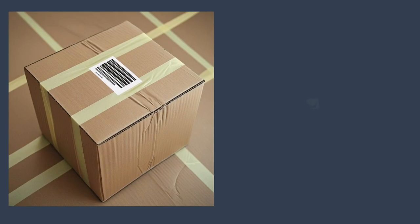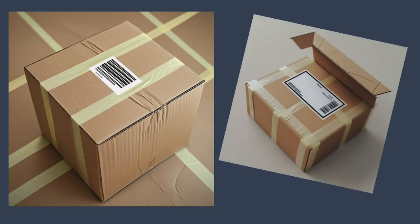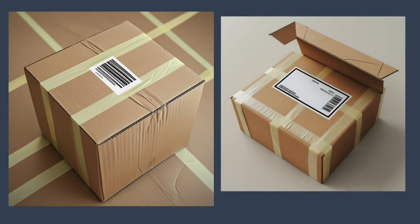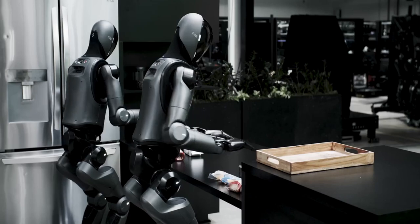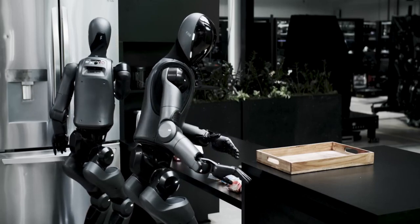In logistics, no two packages are exactly the same. Some are hard, some are soft, some are heavy or awkwardly shaped. Some sit flat, while others sag or roll. Traditional robots can't deal with this. They're built for repeatable, rigid environments.